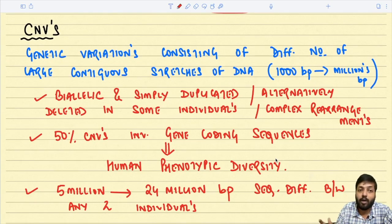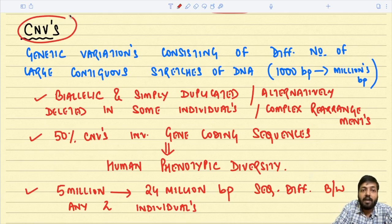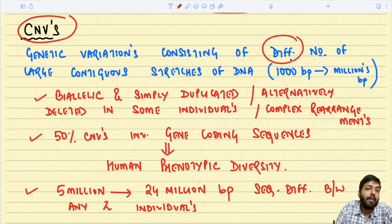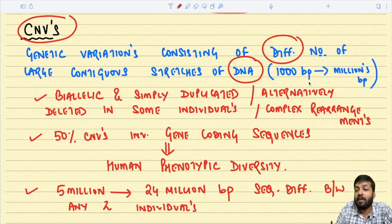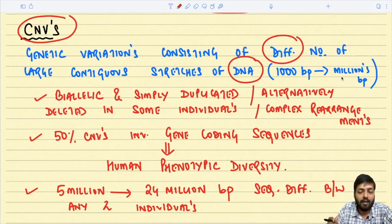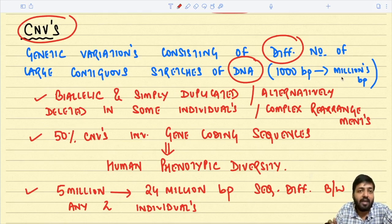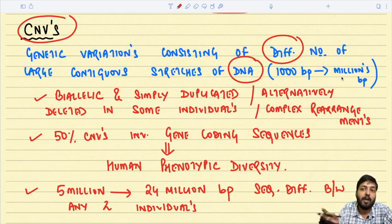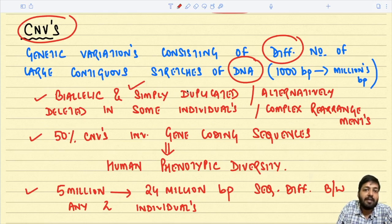Now we will read about another kind of variation in the non-protein encoding region — copy number variation. These are genetic variations consisting of different numbers of large contiguous stretches of DNA, ranging approximately between 1,000 base pairs to 1 million base pairs. Unlike SNPs where variation is at the level of a single nucleotide, here the variation stretches over long stretches of DNA.